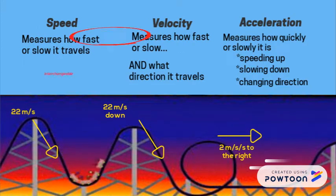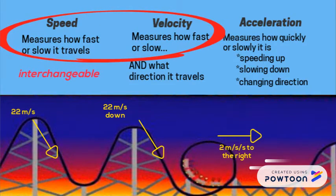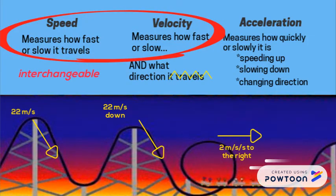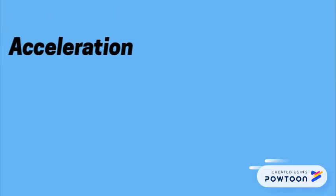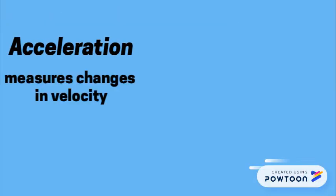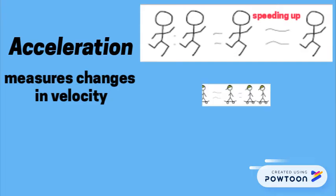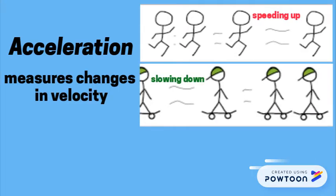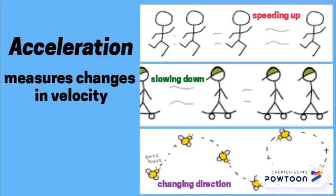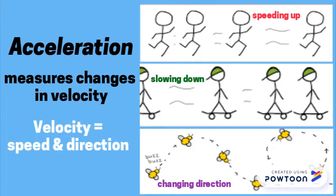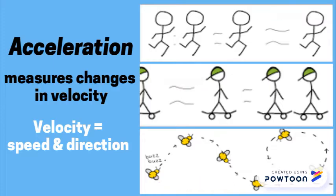In everyday language, speed and velocity are used interchangeably. But for science class, we need to know that technically, velocity includes direction. Watch out for this on quizzes. Acceleration is a change in velocity. Usually people only think of this as speeding up, but don't forget that acceleration could also mean slowing down or changing direction. Because remember, velocity isn't just your speed — it's your speed and your direction.